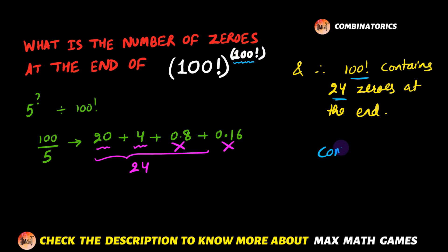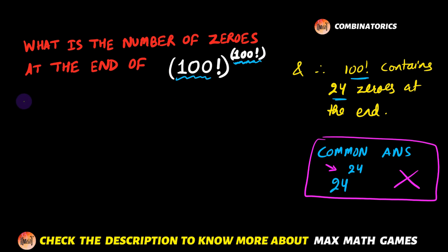The most common answer that I get whenever I discuss this question in my class is 24 raised to the power 24, because they say that there are 24 zeros here, 24 zeros here, and hence the answer is going to be 24^24. Tell me in the comments if you have gotten this answer, or if you have gotten any other answer. But this is not the correct answer.